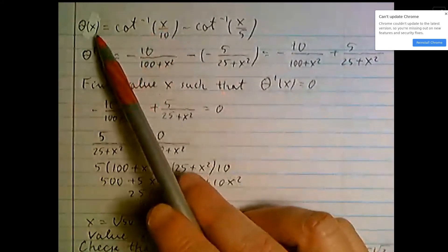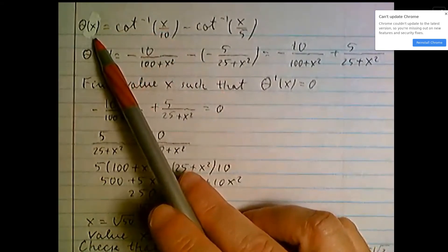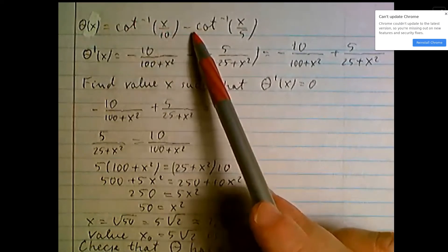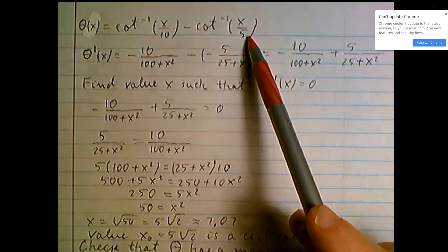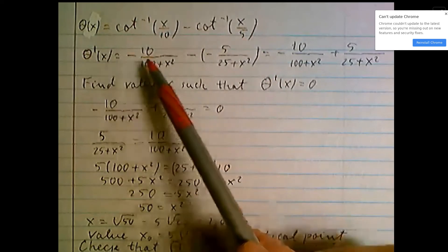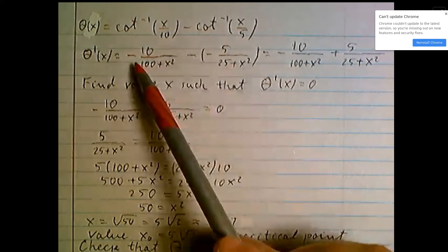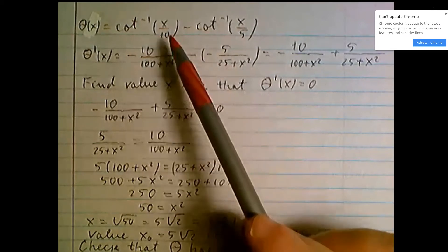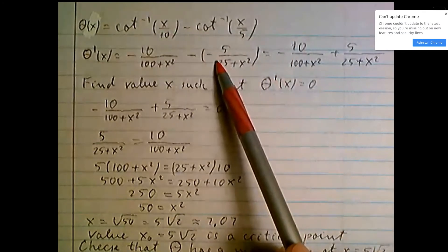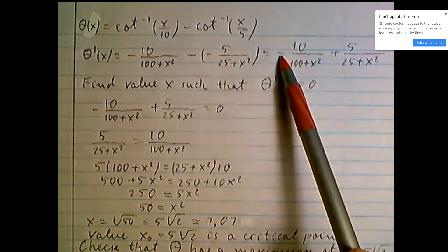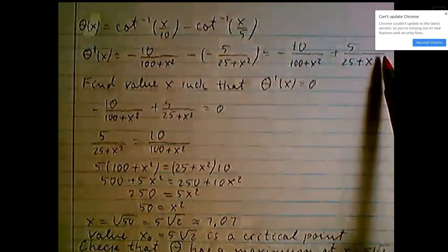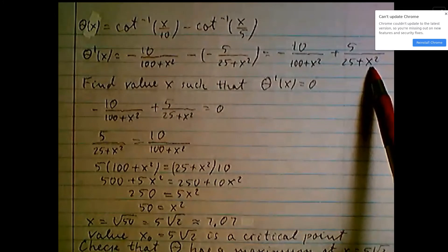Just now repeat: we have expression function theta of x equals inverse cot x over 10 minus inverse cot x over 5, and derivative theta prime of x: subtract the expression, derivative of this term and this term. Minus and minus will be plus, so it's minus 10 over 100 plus x squared plus 5 over 25 plus x squared.